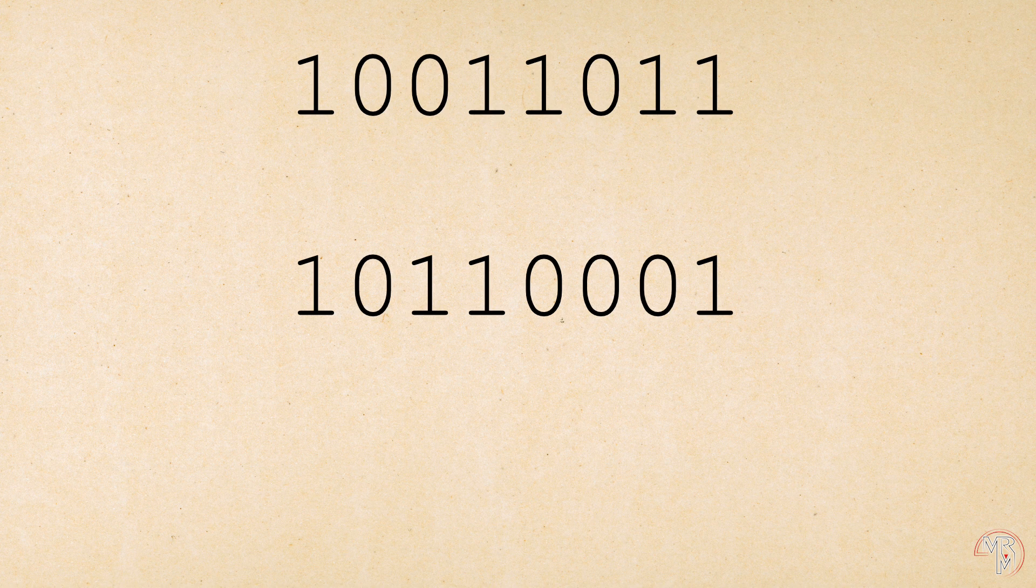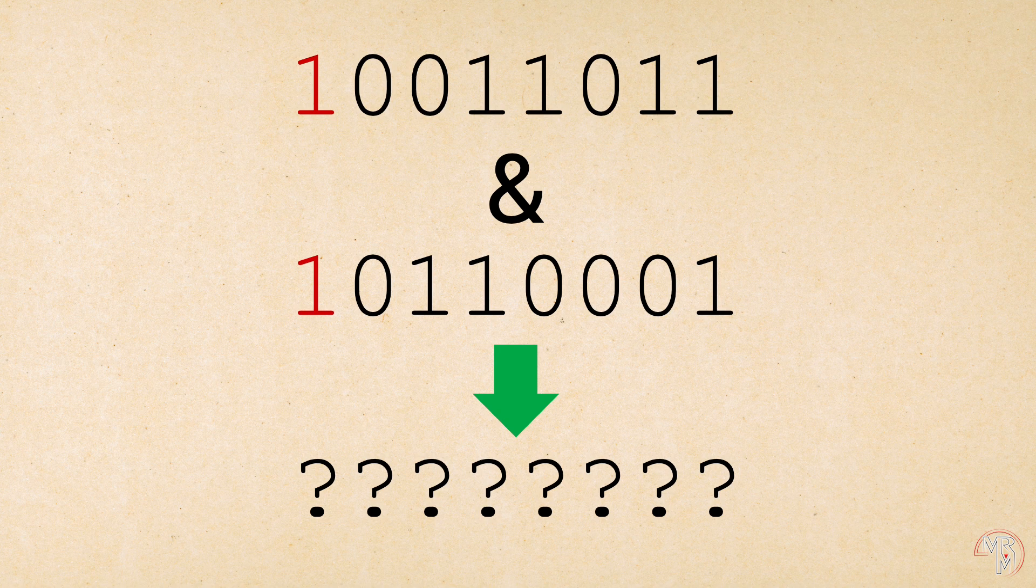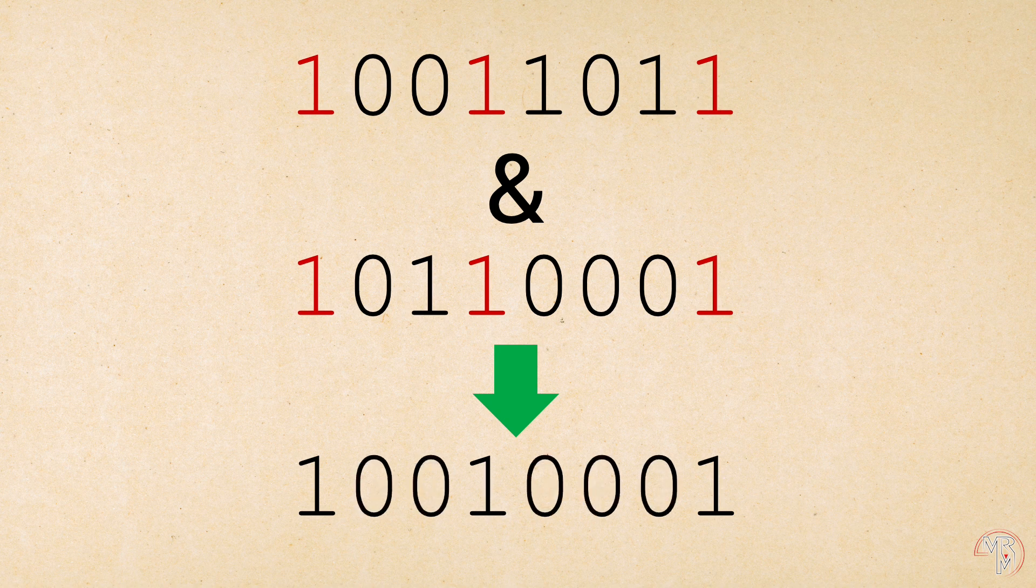Say we have two binary sequences. If we apply the bitwise AND, we will get a third binary sequence, which is created as follows. We compare corresponding bits of both sequences, one by one, and if both bits are set to one, the corresponding bit in the resultant sequence is set to one. And otherwise, it is set to zero.